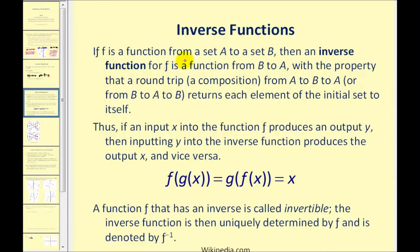For a more formal definition: if f is a function from a set A to a set B, then an inverse function of f is a function from B to A, with the property that a round trip, or a composition from A to B to A, returns each element of the initial set to itself. This leads us to f of g of x equals g of f of x, which equals x. A function that has an inverse is called invertible, and the inverse function is denoted by inverse function notation. Be careful — this looks similar to exponential notation, but this is inverse notation for function f.